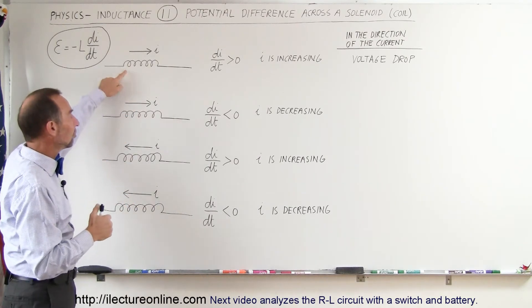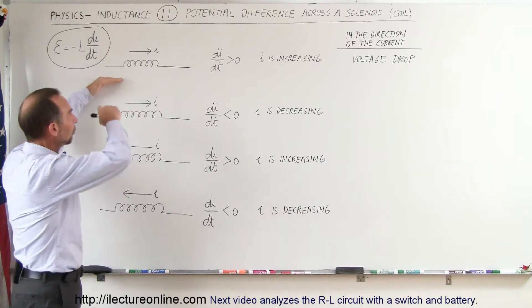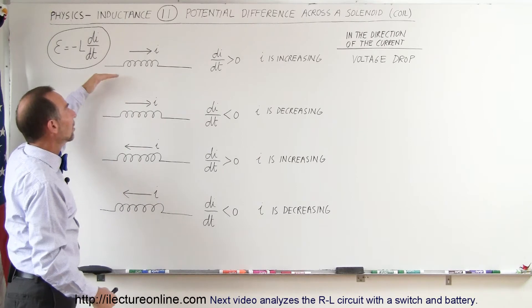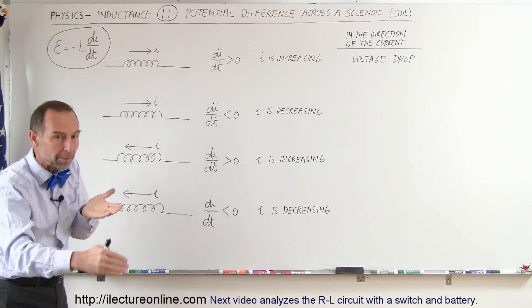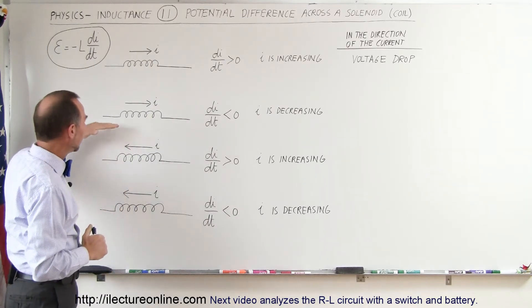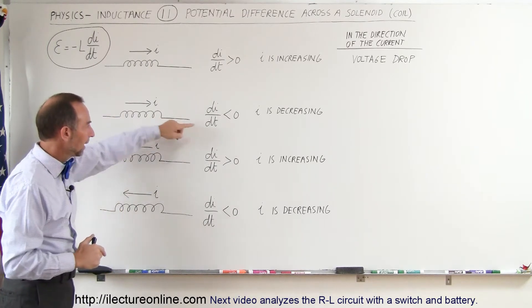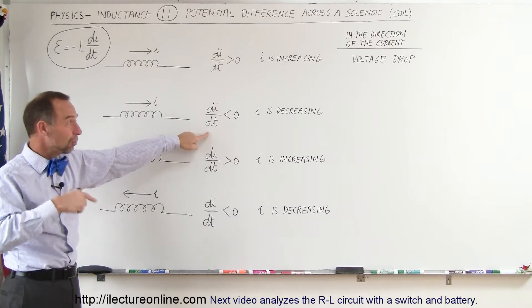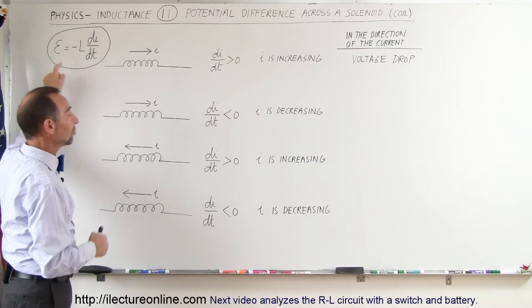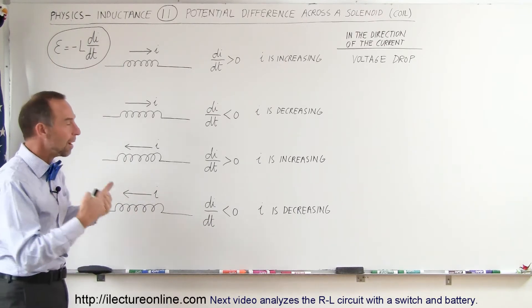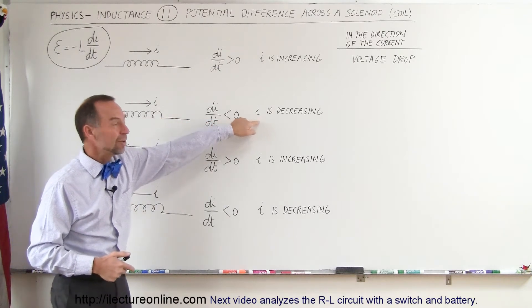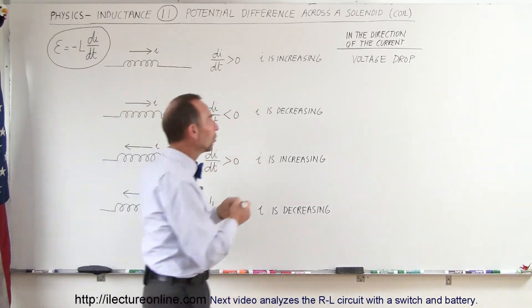So for an inductor, just like a resistor, if you follow the current, the voltage will drop across the resistor when you follow the current direction. And with an inductor, the voltage will drop across the inductor if the current is increasing. Therefore, if you follow the direction of the current and the current is decreasing — it's getting smaller — that means dI/dt is negative. The negatives cancel and the voltage is actually a voltage rise, a positive quantity. So following the direction of the current across an inductor, when the current is decreasing, we see a voltage rise.